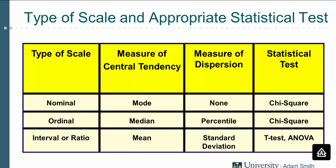You can always turn a ratio scale into an ordinal scale, but you cannot do it the other way around. If you use ordinal scales, you will not be able to calculate what the average age is in your sample. My advice is: whenever possible, use ratio or interval type scales, where the intervals are of equal size.